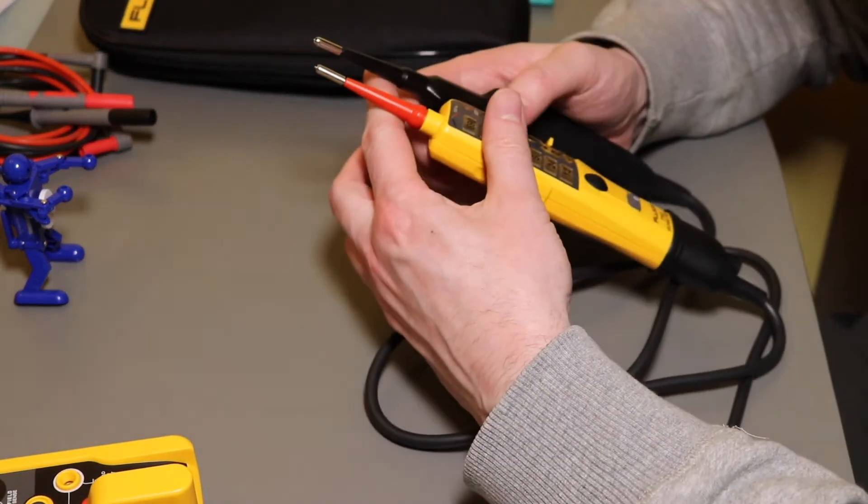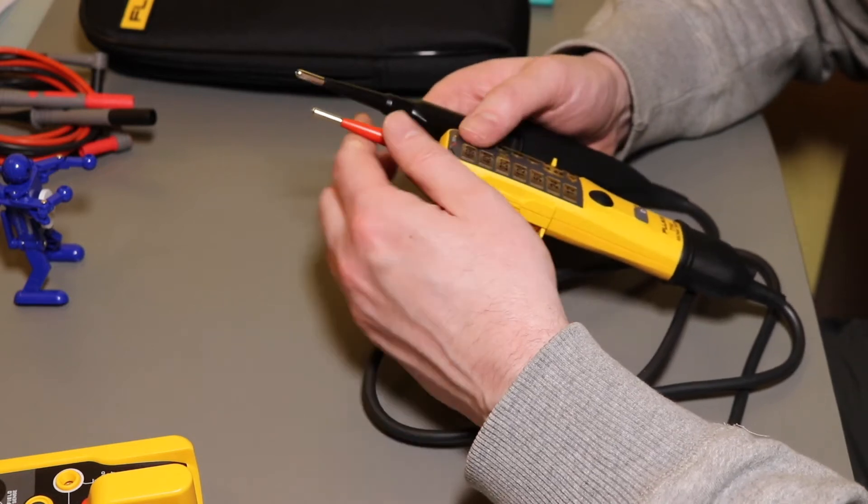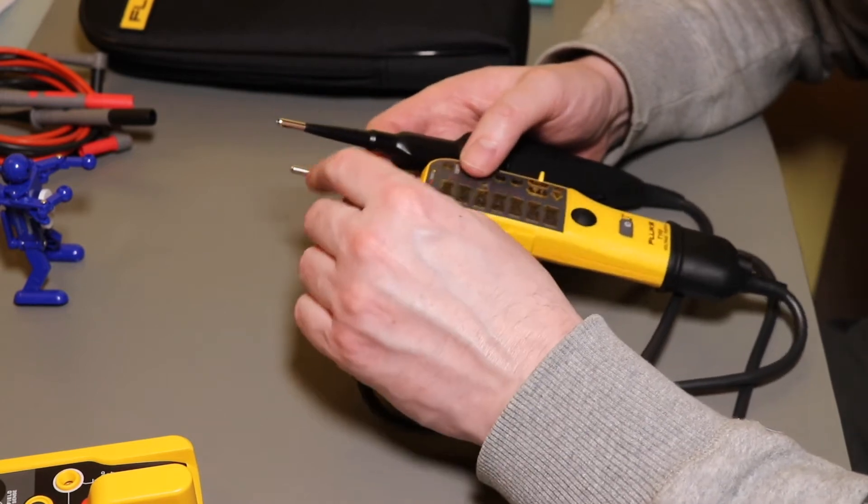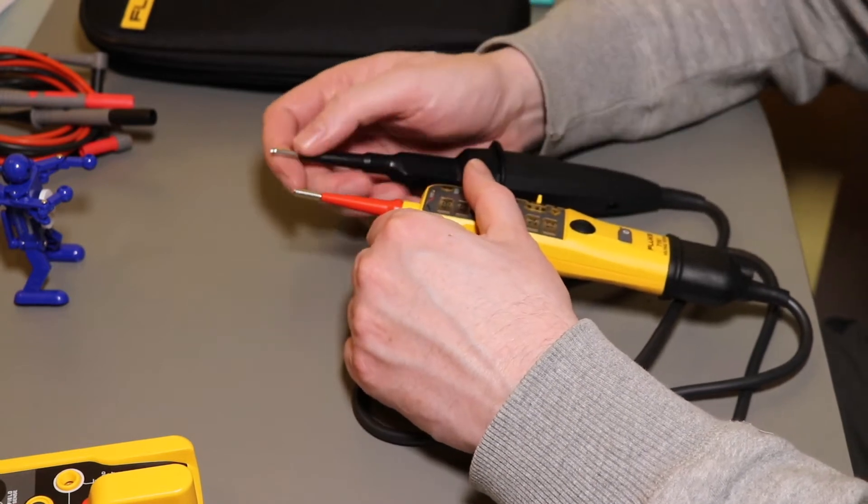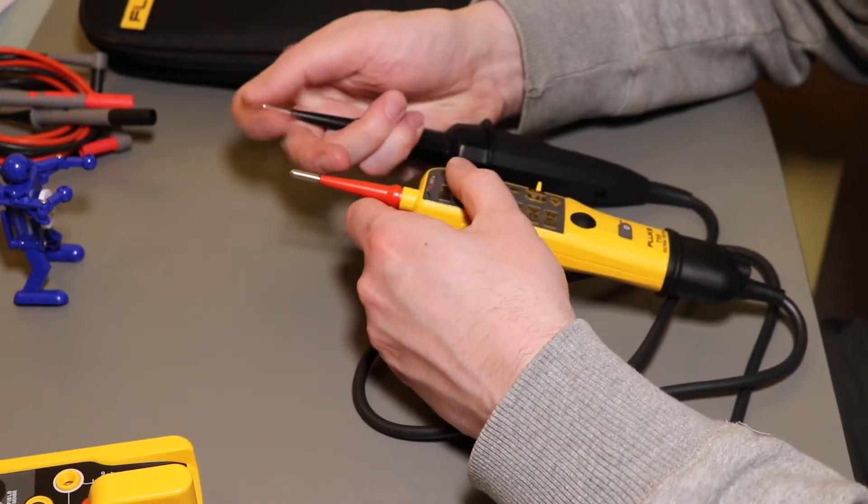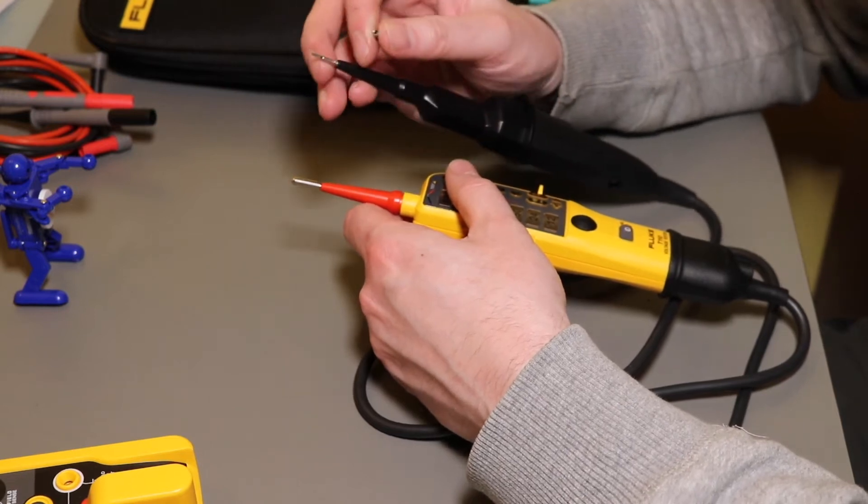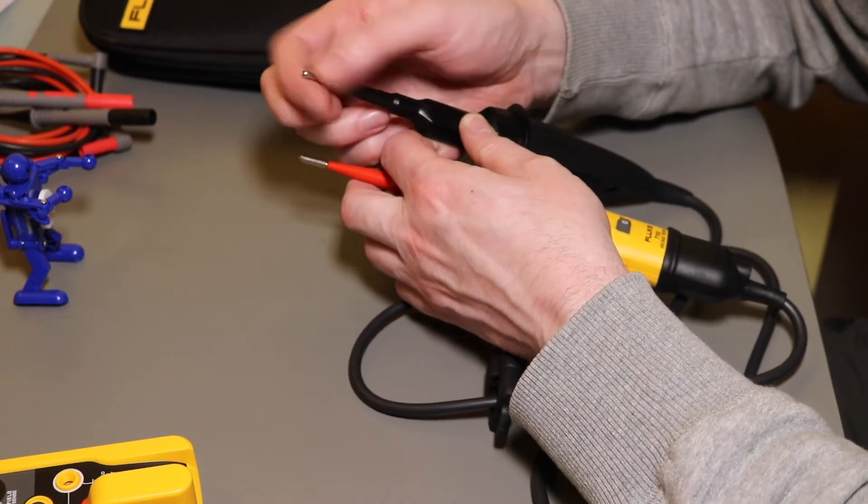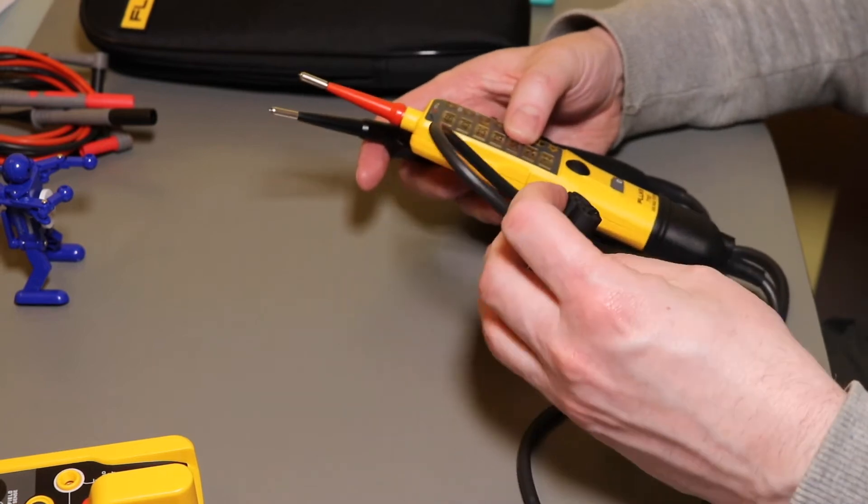They're useful when we used to test for dead originally. With just a probe tip like that which is quite thin, you can very easily bend it. So they've made these to give a bit more strength, which is quite a good idea really.